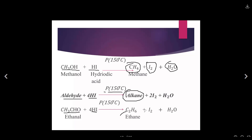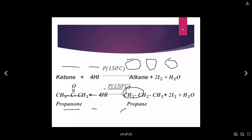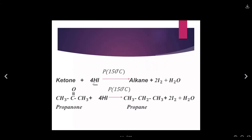A typical example of an aldehyde member: ethanal reacts with four molecules of hydrogen iodide to produce ethane, plus iodine molecules and water. Then for ketone, ketone also reacts with four molecules of hydrogen iodide in the presence of a temperature of 150 degrees centigrade and phosphorus, and alkane is produced too.